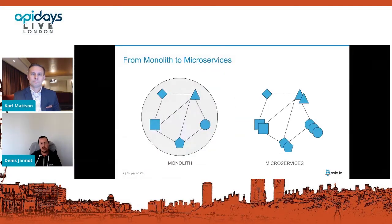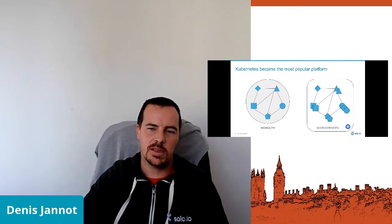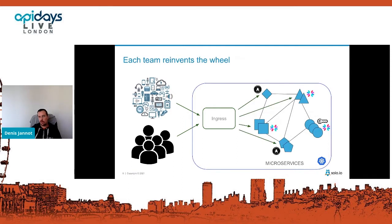A little background: everyone knows we are moving from monolith to microservices, and most of these microservices tend to be deployed on Kubernetes today. What we see is that at the beginning, when we start to have a few services running on Kubernetes, we tend to just expose them through an ingress controller like NGINX or HAProxy. It does the job — you can secure it with TLS and do some basic routing.